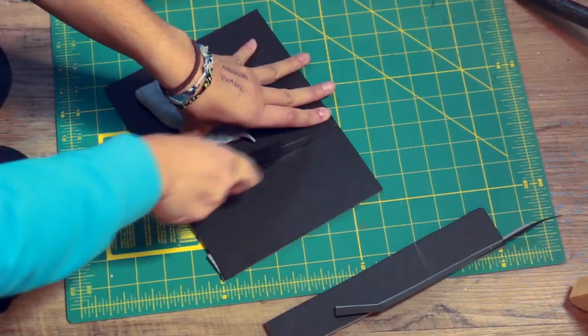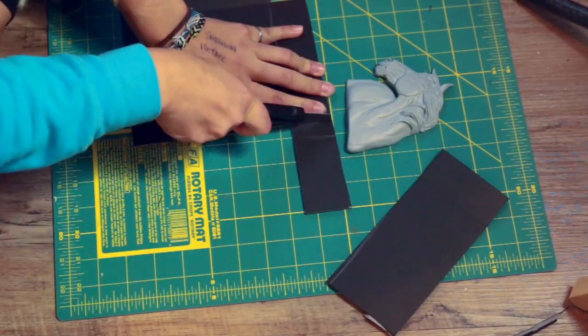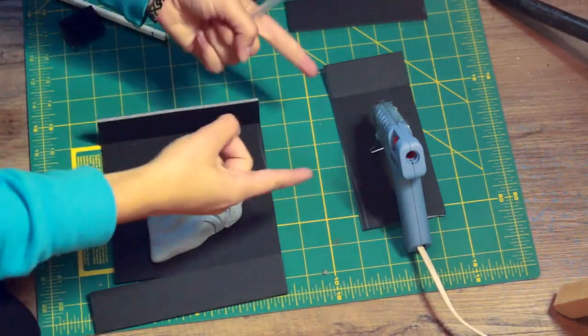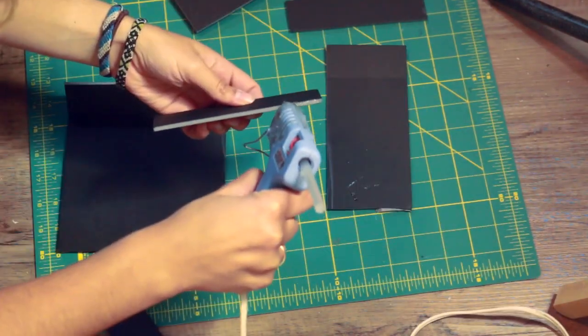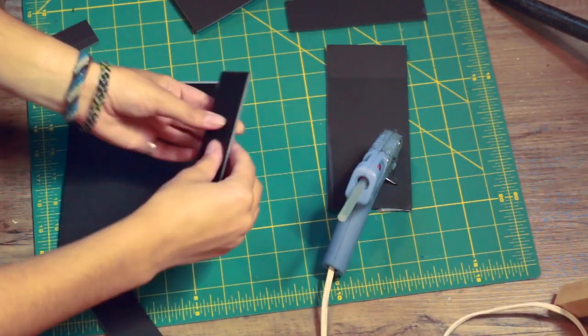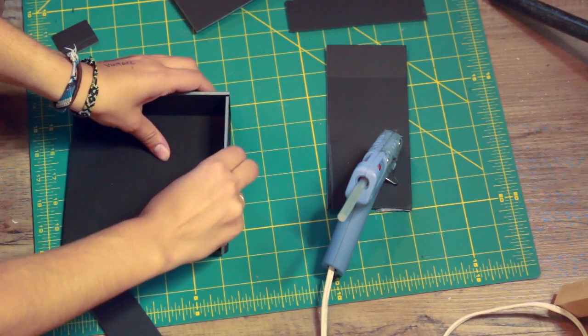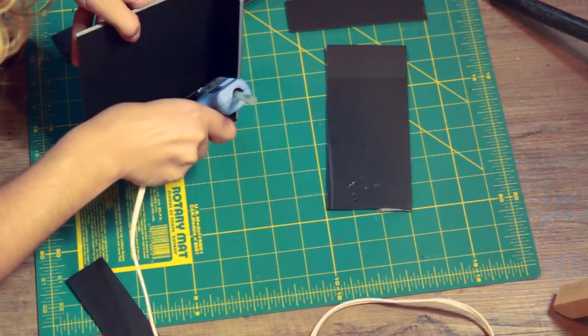So here I'm taking foam core board and making a mold box for the medallion and using a hot glue gun to form it all together. You want to make sure that the edges are tall enough that the medallion will be covered with silicone but not too tall that they're just gonna get in your way.